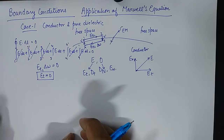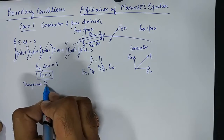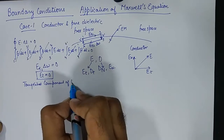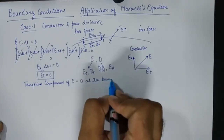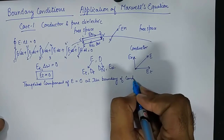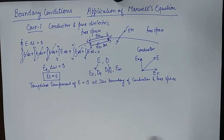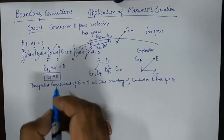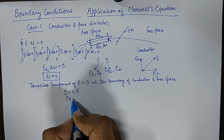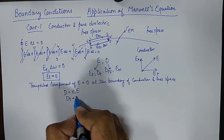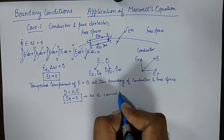So what we can say is that the tangential component of electric field intensity is 0 at the boundary of a conductor and free space. And since D = ε·E, the tangential component of electric flux density D is also 0, as ε₁ cannot be 0.